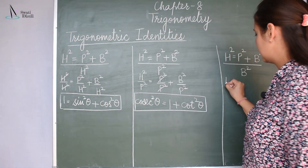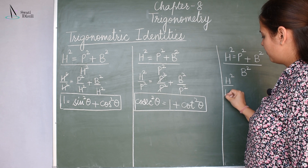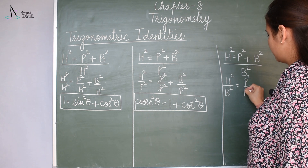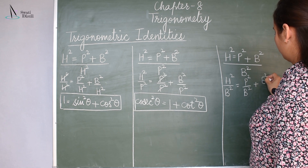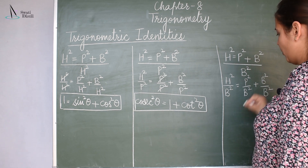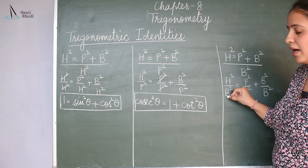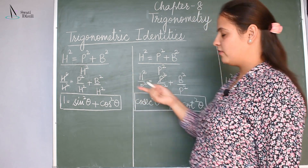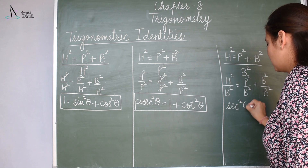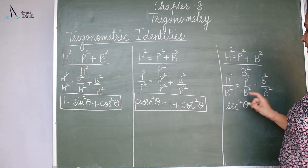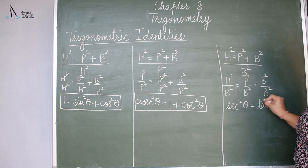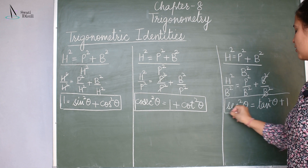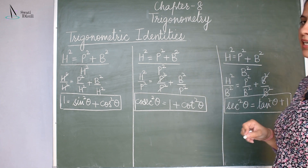Now let's proceed to the third identity. H square by B square is equal to P square by B square plus B square by B square. H by B — since B by H is cosine — so its reciprocal will be secant. So secant square theta is equal to P by B, which is tan square theta, plus 1. This is your third identity.